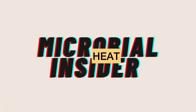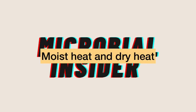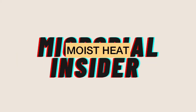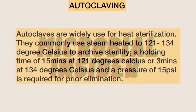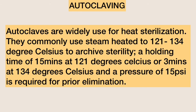The first physical method we will be talking about is heat, which can be further divided into moist heat and dry heat. Methods that employ moist heat include autoclaves, which are widely used for heat sterilization. Steam is commonly heated to a temperature of 121 to 134 degrees Celsius. A holding time of 15 minutes at 121 degrees Celsius, or 3 minutes at 134 degrees Celsius, and a pressure of 15 psi is required for sterilization.